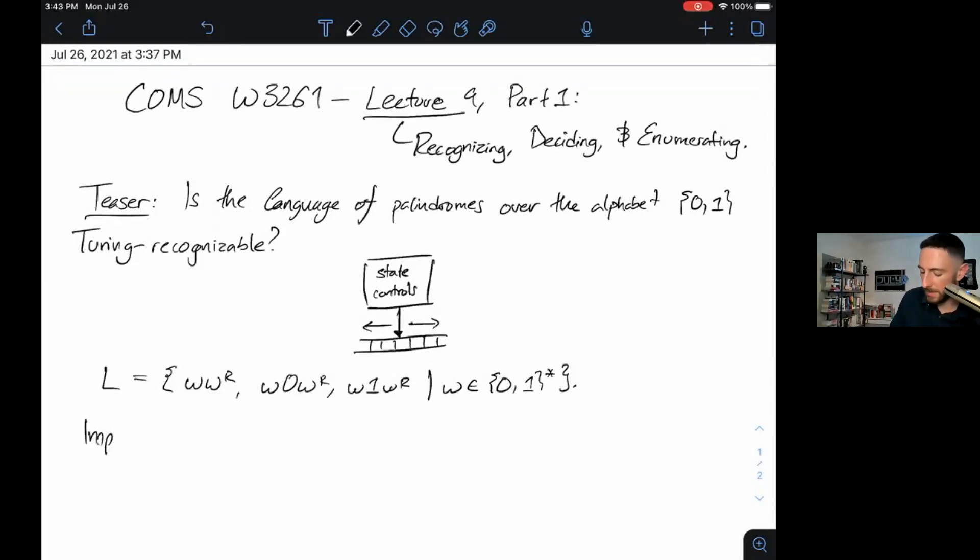An implementation level description is a description where we don't specify the specifics of the states or the transition function, but we do talk about how the head moves around and how we manage memory on the tape. It's just a little bit less formal than the complete formal specification of the Turing machine as a 7-tuple.